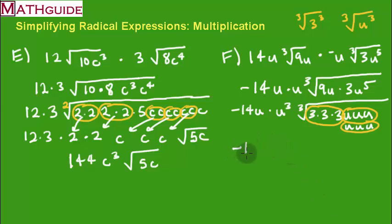So what's on the outside? I've got a negative 14u, u cubed. I've got a 3 that goes on the outside. I've got a u that comes on the outside. And I've got another u. And it looks like there's nothing left underneath the cube root sign. So I don't need to write the cube root sign. All of this is on the outside.